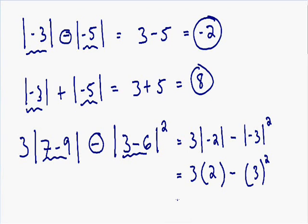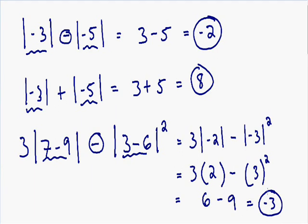The absolute value of negative 2 is positive 2, and the absolute value of negative 3 is positive 3, with the squared still on top. So we have 3 times 2 which is 6, minus 3 squared which is 3 times 3, equal to 9. And 6 minus 9 is equal to negative 3. This is our solution.